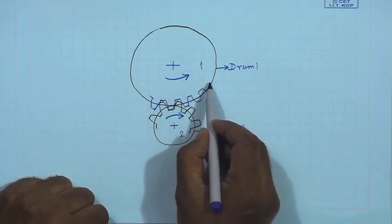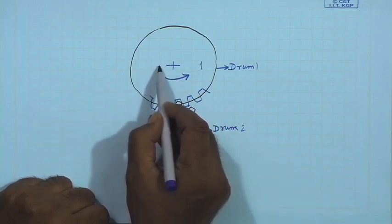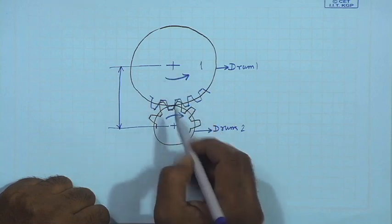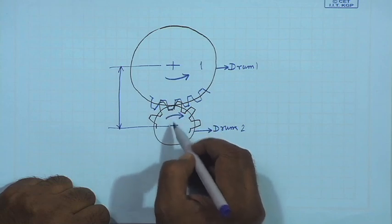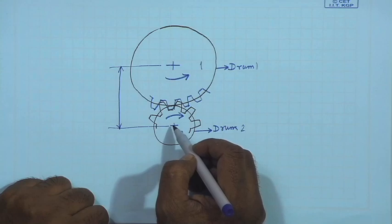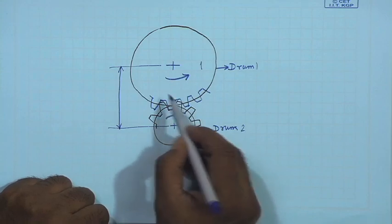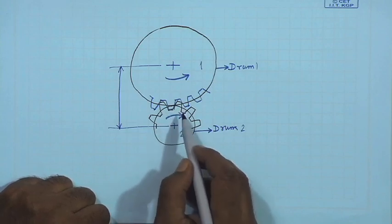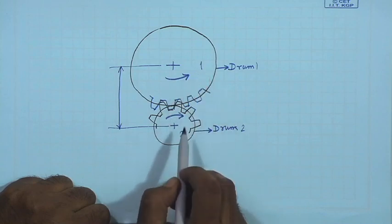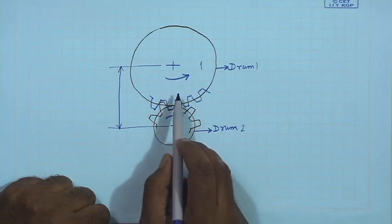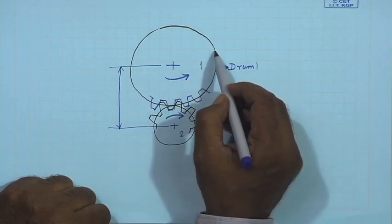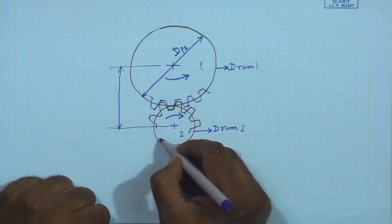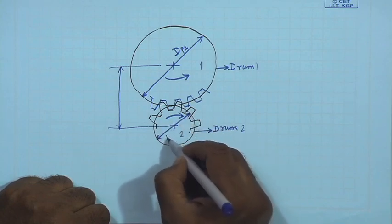The drums drive each other by friction without slip. If these rotating discs produce the same RPM ratio as that obtained by the rotating gears, then the diameters of these two drums are referred to as the pitch diameters of the two gears. This is our definition of pitch diameter.